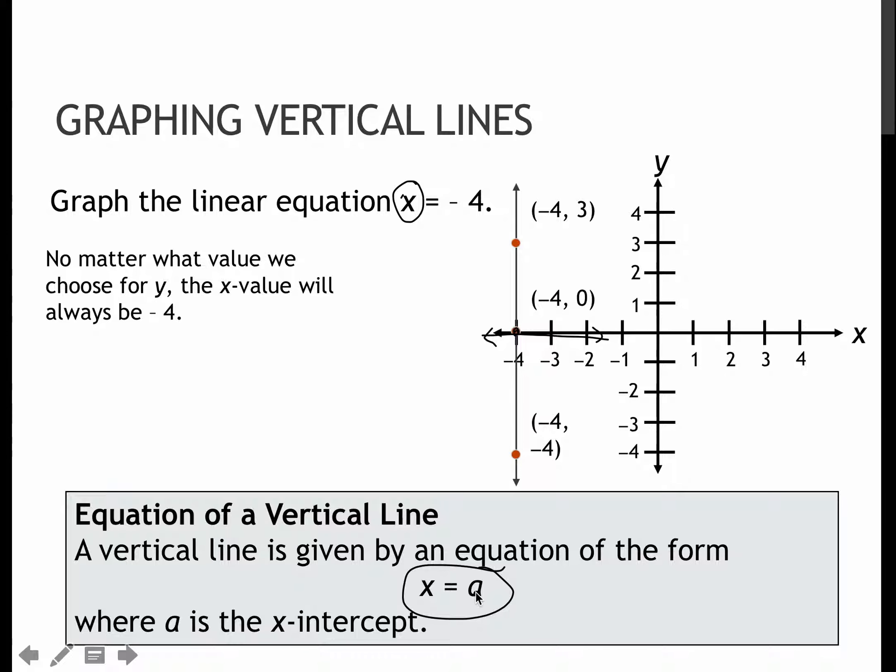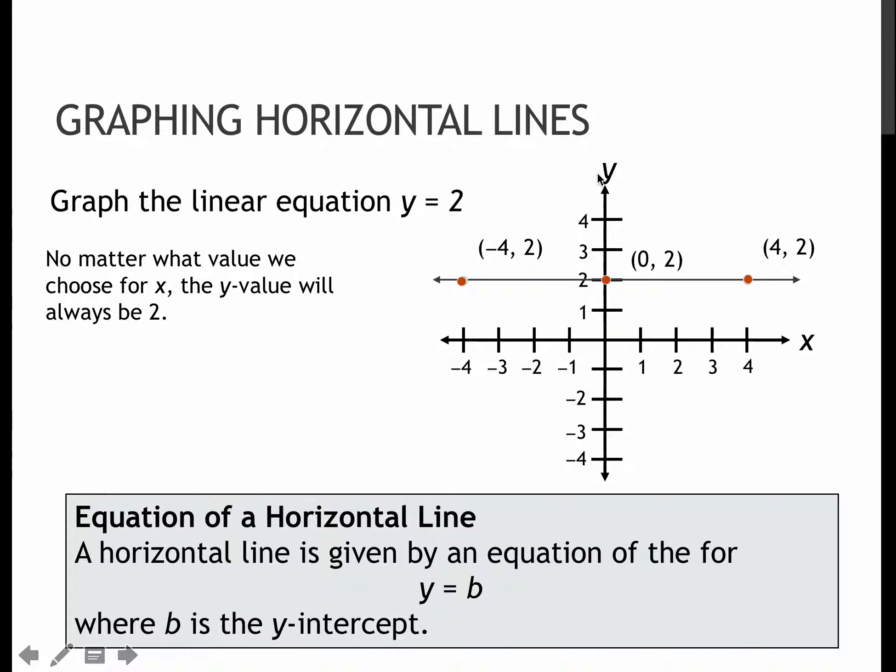So the equation of any vertical line will be that x is by itself with no y-value. So a, meaning that's just a is the x-intercept. That's where it crosses the x-axis.